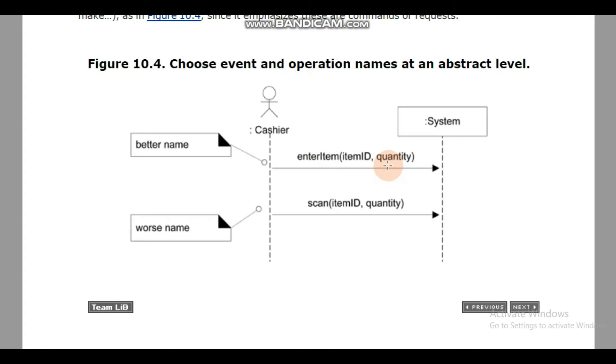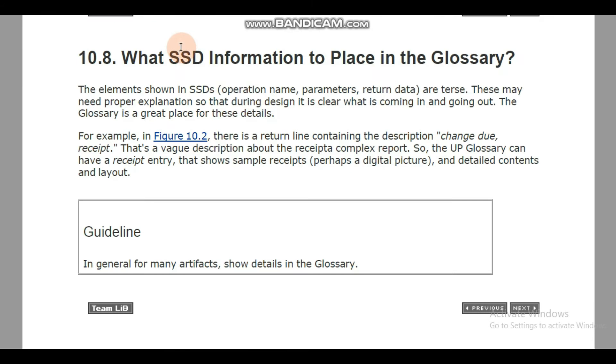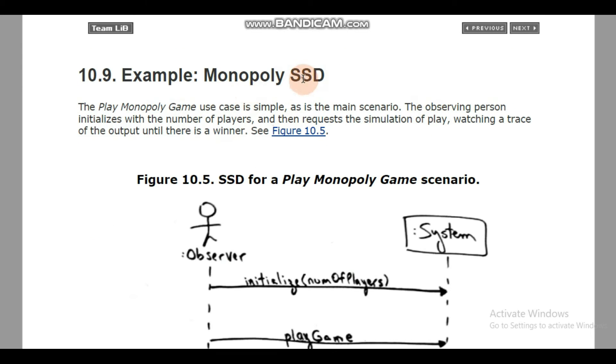Next thing is what system sequence diagram information to place in the glossary. The elements shown in sequence system diagrams like operation name, parameters, return data are terse and may need proper explanation. The glossary is a great place to keep these details. The operation name, parameters, or return type - these elements are shown in the glossary. You can also see a Monopoly example for system sequence diagram.